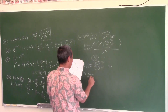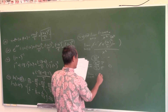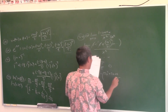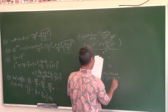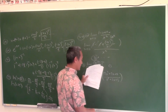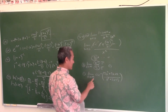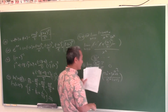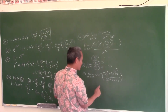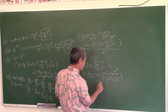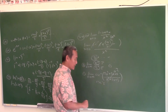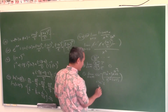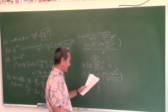Limit as x approaches infinity of arccsc((2x² + 3x + 4)/(x² + 2x + 3)). The expression inside arccsc approaches 2 as x approaches infinity, since the degree of numerator and denominator are the same and you look at leading coefficients. So the whole thing approaches arccsc(2), meaning the sine of what angle is 1/2, which is π/6 — so the answer is π/6.